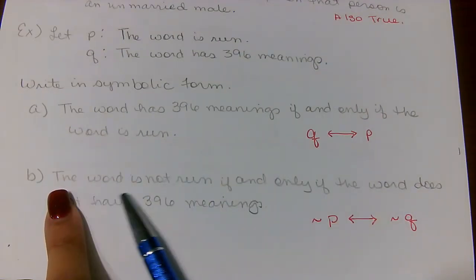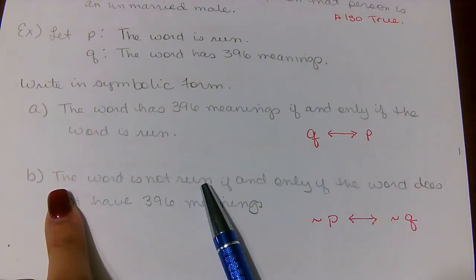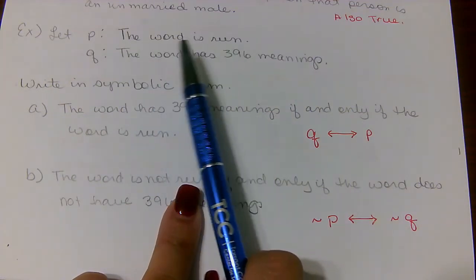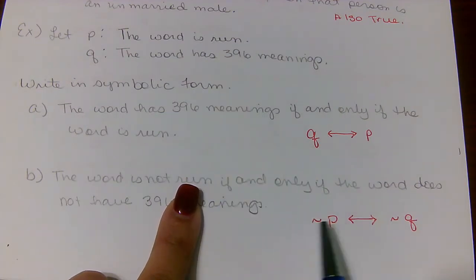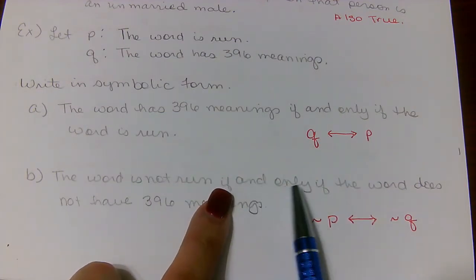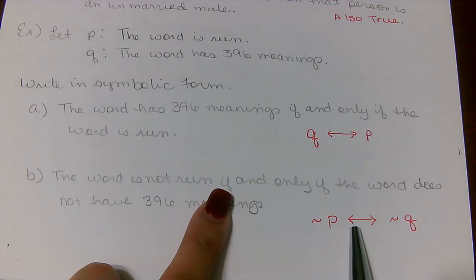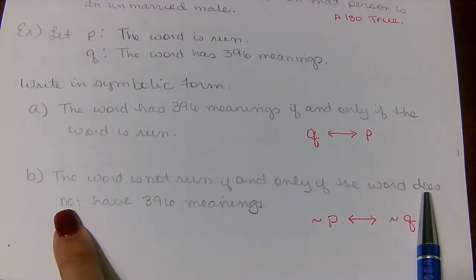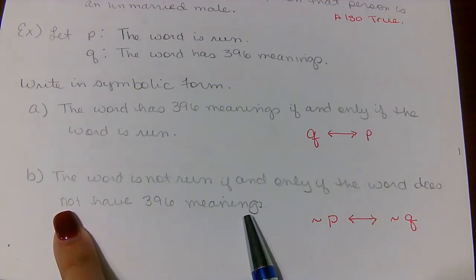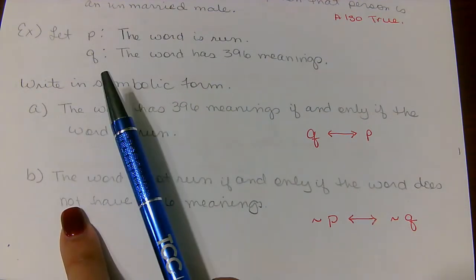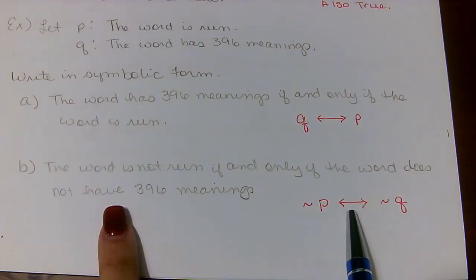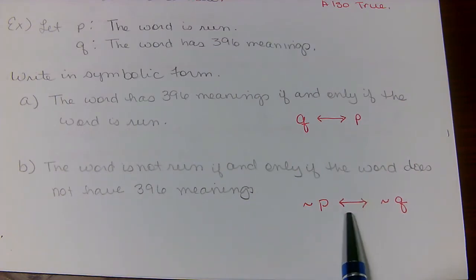For part B: the word is not run — that's ¬P, the opposite of P — if and only if, using the double arrow, the word does not have 396 meanings. This is the opposite of Q, so we put ¬Q after the biconditional symbol, giving us ¬P ↔ ¬Q.